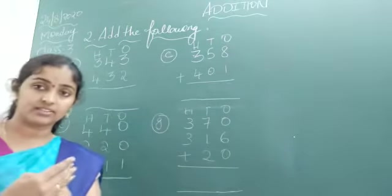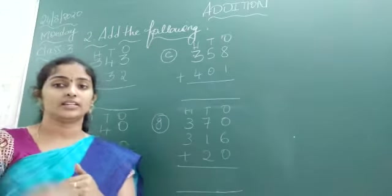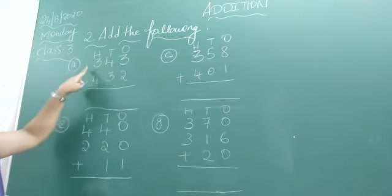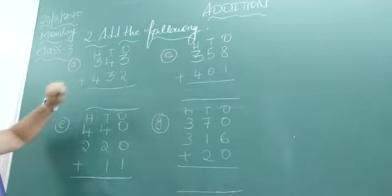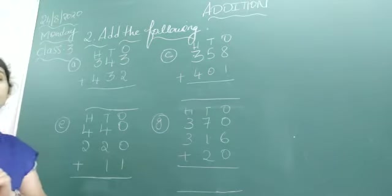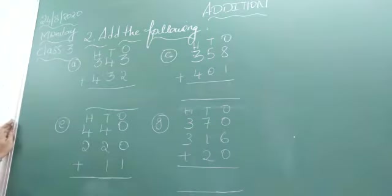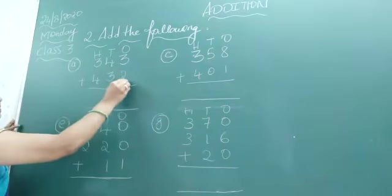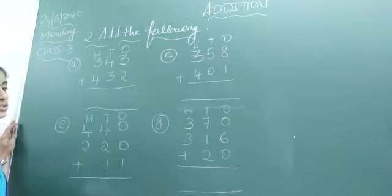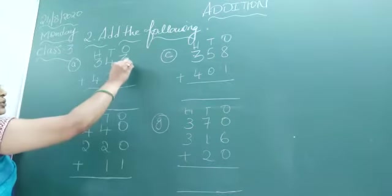Like that it continues. Here up to hundreds place is given. Let me start adding from the ones place. What is there in ones place? 3. And what is there in ones place here? 2.